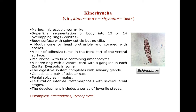Now phylum Kinorhyncha. They are marine, microscopic, and worm-like. They have superficial segmentation of the body into 13 or 14 overlapping rings known as zonites. The body surface has a spiny cuticle but there are no cilia. The mouth cone or head is protrusible and covered with spines. There are a pair of adhesive tubes on the front part of the ventral surface. A pseudocoele is present filled with fluid containing amoebocytes. There is a nerve ring with a ventral cord with ganglia in each zonite. Eyespots are present in some zonites.